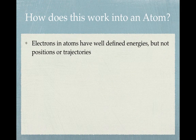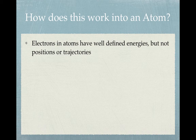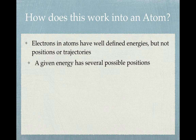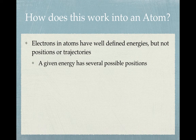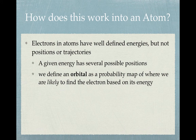How does this factor into an atom? The electrons in atoms have well-defined energies — those we can define — but they don't have well-defined positions, trajectories, or paths. A given energy has several possible positions. So what we do is look at a probability map of where we are most likely to find an electron around an atom based on its energy. That is how we define an orbital: essentially a probability map of where we are likely to find the electron.